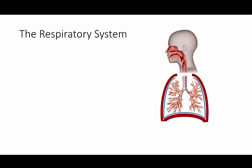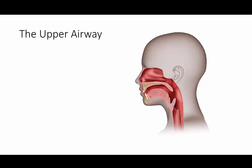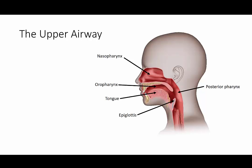These are the major components of the respiratory system. They can be divided into a number of different anatomic and functional categories, but for our purposes today we will start from the top and work our way down and gradually out, beginning with the upper airway. This section includes, among other things, the nasopharynx, oropharynx, tongue, posterior pharynx, epiglottis, and trachea.